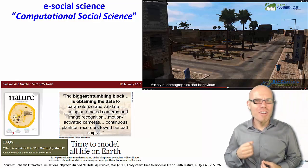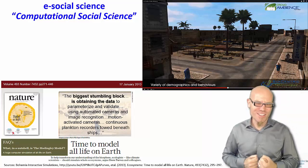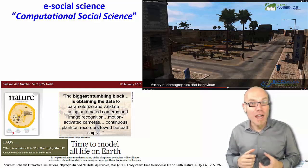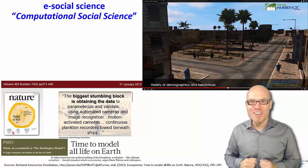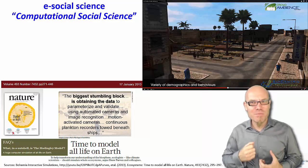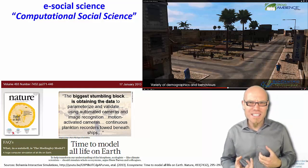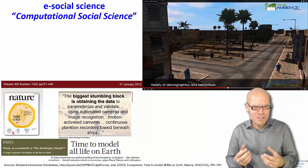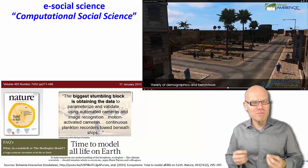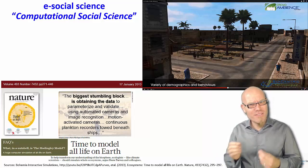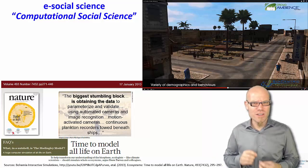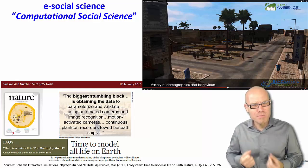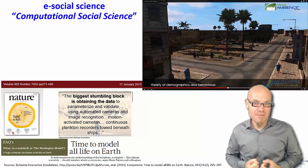They used sophisticated methods: automated cameras and image recognition technologies, motion activated cameras in the jungle to see when the mammals come out, continuous planking recorders towed underneath ships to see where the fish are in the ocean—just to get some data to parameterize and validate the model, to fine tune their assumptions about how all life on Earth actually works. And that's the biggest problem: obtaining the data.